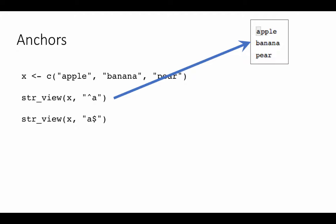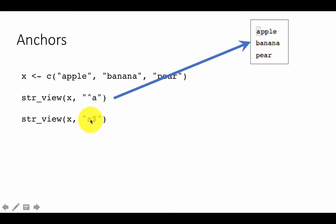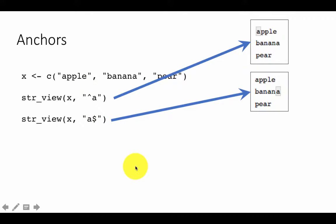The dollar sign correspondingly stands for the end of a string. So this pattern says: show me all strings that end with 'a'. The caret says 'beginning with' and the dollar says 'ending with'. So 'a' occurs and then that's the end of the string. In this case it's going to match 'banana', because that's the only one which ends with an 'a'.